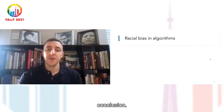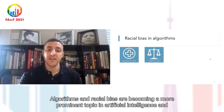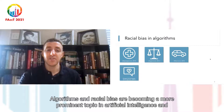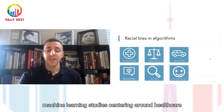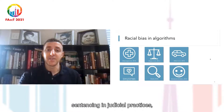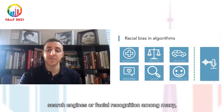Racial bias has been found in algorithms across various sectors, such as in healthcare, judicial sentencing, autonomous vehicles, hate speech detection, search algorithms, and facial recognition, among many other places. But one area that has been largely neglected in many studies is that of automatic speech recognition.